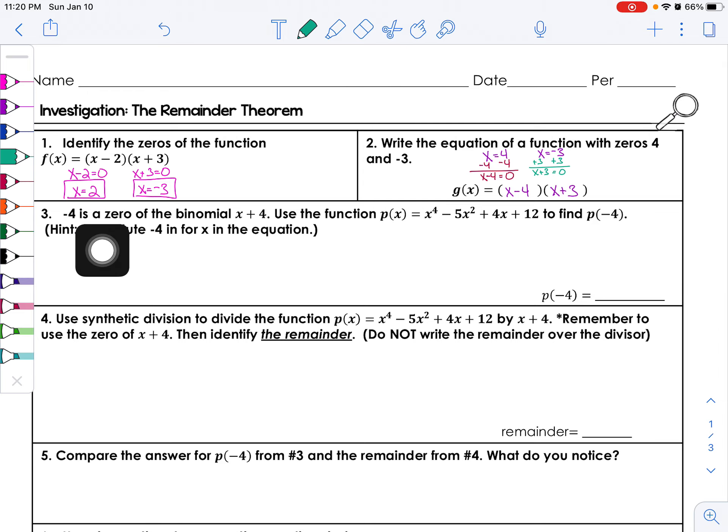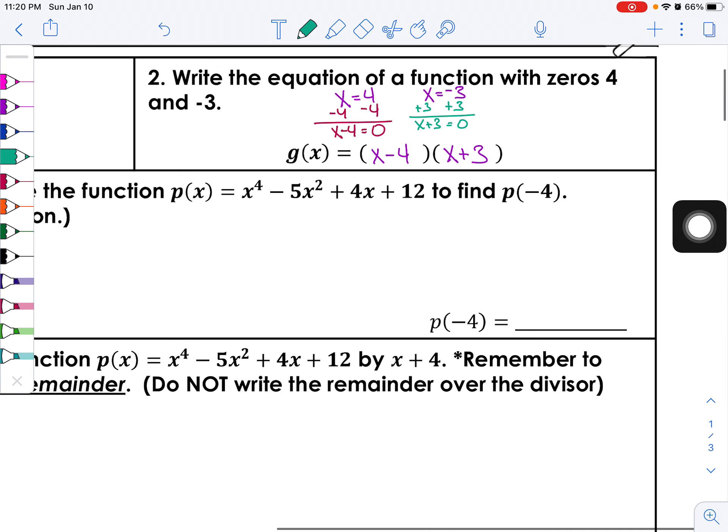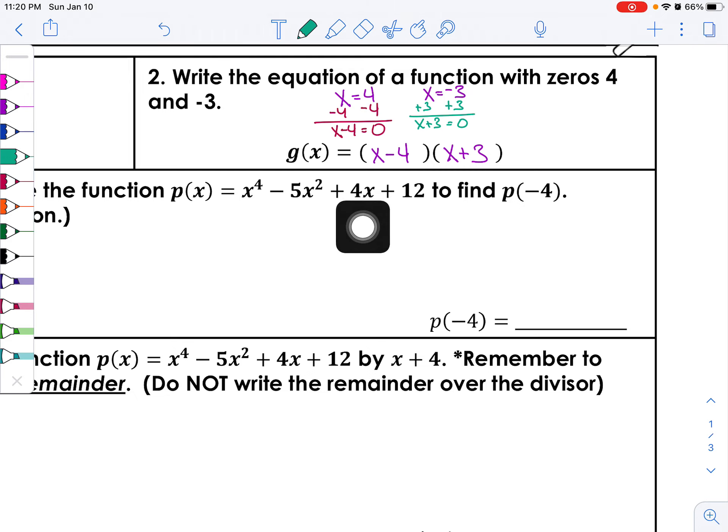All right, number three: negative four is a zero of the binomial x plus four. Since we were just talking about it, if we take x plus four and we set it equal to zero, we would get negative four. Use the function p(x) to find p of negative four. Well, that just means all of these x's, every single one of them, I'm going to replace with a negative four.